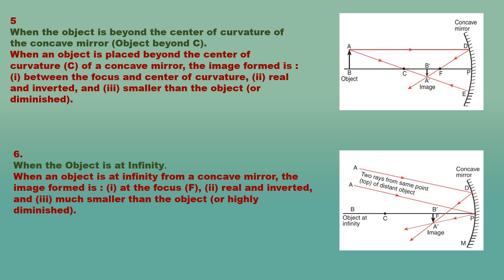Case 5: when the object is placed beyond the center of curvature C. A ray AD parallel to the principal axis passes through focus F after reflection. A second ray AE through center of curvature C falls normally on the mirror and returns along the same path. The two reflected rays intersect at A′, giving image A′B′ which is real and can be received on a screen. When the object is beyond C, the image formed is: between the focus and center of curvature, real and inverted, and smaller than the object (diminished).